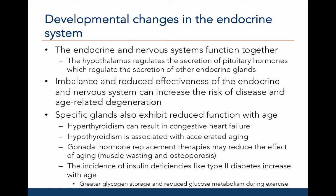The endocrine system and nervous system function together. The hypothalamus regulates the secretion of pituitary hormones, which regulate the secretion of other endocrine gland hormones. Imbalance and reduced effectiveness of these systems can increase risk of disease and age-related degeneration. Specific glands also exhibit reduced functions with age. Hyperthyroidism, an increase in thyroid hormone, can result in congestive heart failure, while hypothyroidism, a decrease in thyroid hormone, is associated with accelerated aging. With respect to gonadal hormones, androgen and estrogen replacement therapies can reduce the effects of aging like muscle wasting and osteoporosis, respectively. Lastly, the incidence of insulin deficiencies like type 2 diabetes also increases with age, resulting in greater glycogen storage and reduced glucose metabolism during exercise.